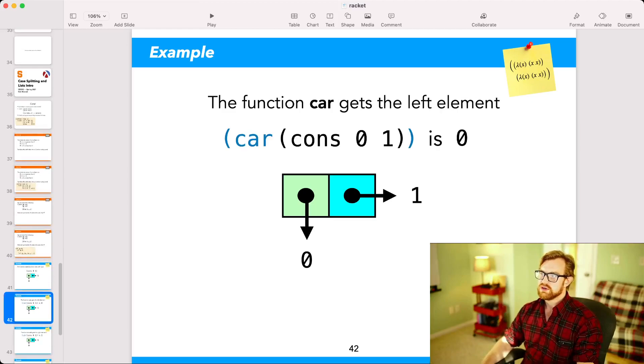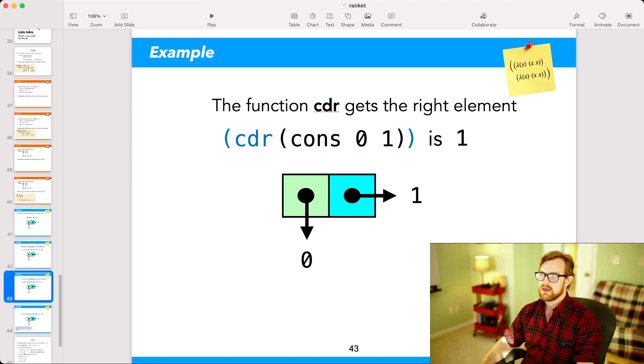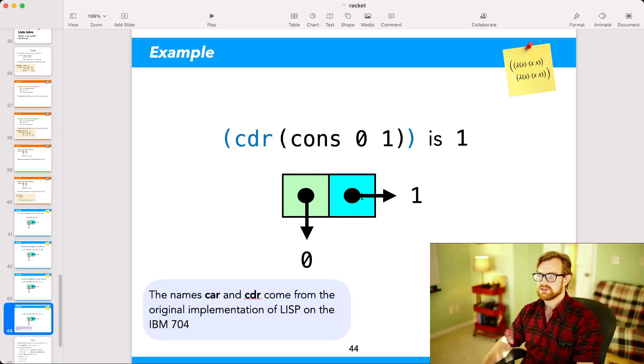Now I can do two things with a pair. I can get its first element, or its left side, and I can get its right element, or its right side. I use the function car to get the left side. And I use the function cdr to get the right side. Now, the name of these instructions actually comes from the original implementation of Lisp on the IBM 704. I'm happy to link you to some more history of Lisp. There's a lot of interesting history about how Lisp was evolved and how it was implemented on a variety of machines.